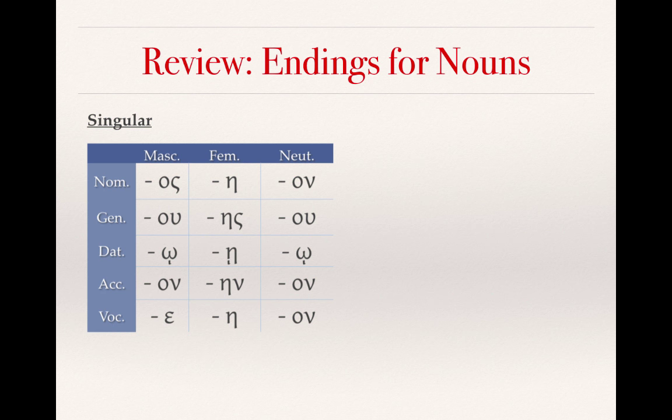We can read the singular endings across, starting with the nominative: os, eh, on; then genitive: u, ace, u; dative: o, eh, o; accusative: on, ain, on; and vocative: eh, eh, on. These are the basic endings of the nouns we've already discussed in previous lectures.